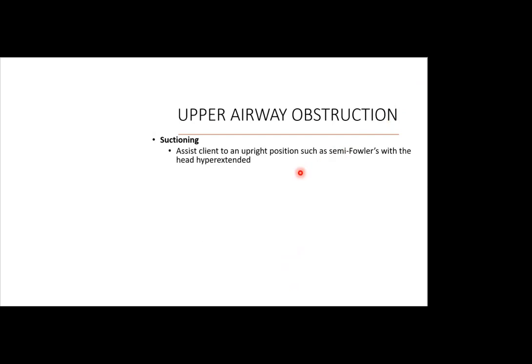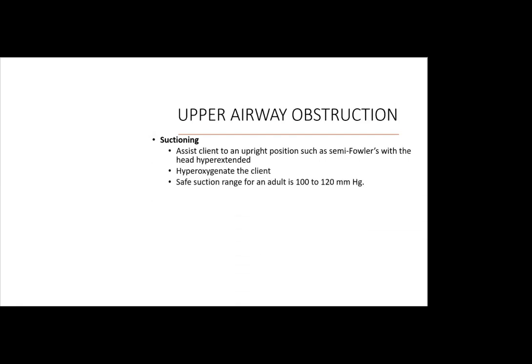With upper airway obstruction we may need to suction the patient. When suctioning, assist the client to an upright position such as semi-Fowler's and hyperextend the head. Pre-oxygenate or hyper-oxygenate the client before suctioning — have the patient take four to five deep breaths, use a manual resuscitation bag, or use the sigh mechanism on a mechanical ventilator. Always pre-oxygenate before suctioning and re-oxygenate afterward. The safe suction range for an adult is 100 to 120 mmHg, using intermittent suctioning for up to 10 to 15 seconds.